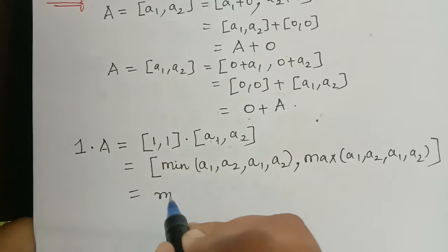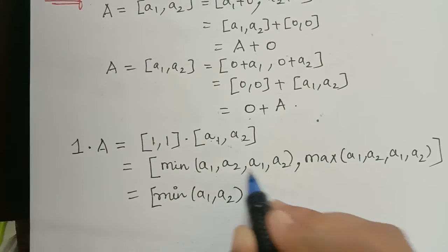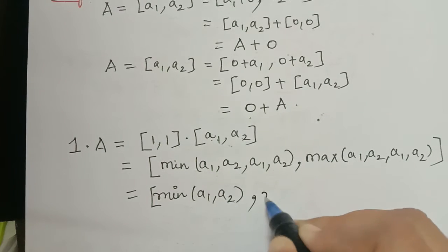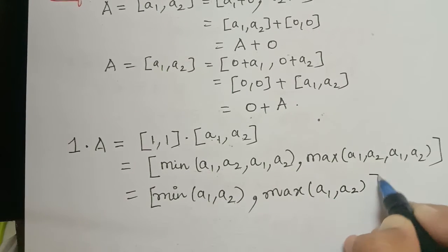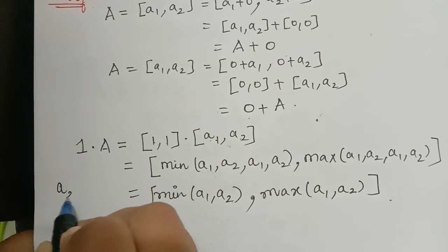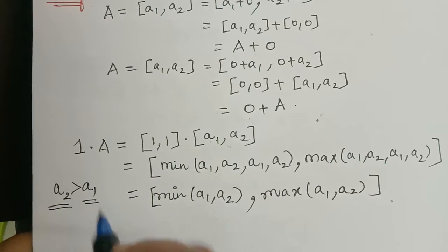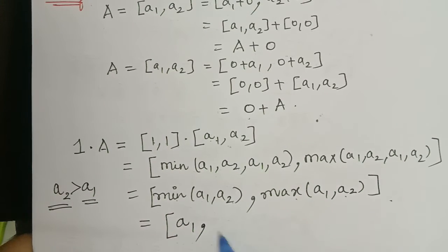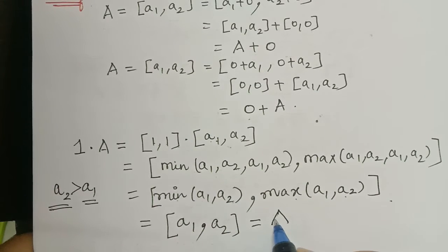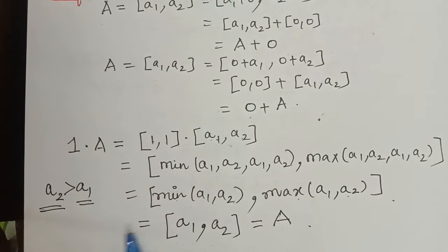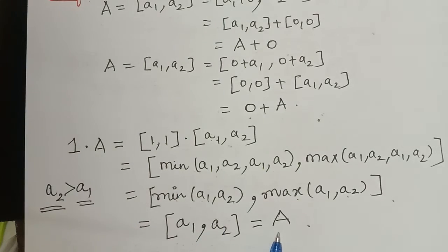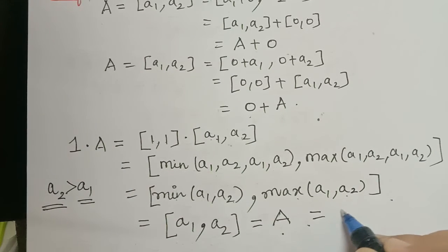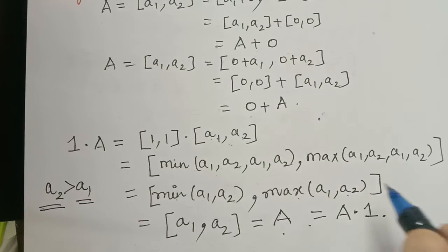That is equal to minimum of [a1, a2], because the values are repeating. When we take the minimum, we can neglect the repeated values. So this will be equal to maximum of [a1, a2]. Now if we assume that a2 is greater than a1, the minimum value is a1 and the maximum value is a2. So this equals [a1, a2], which is capital A. And due to the commutative property already proved, it will also equal a multiplied with 1. So this is the identity property.